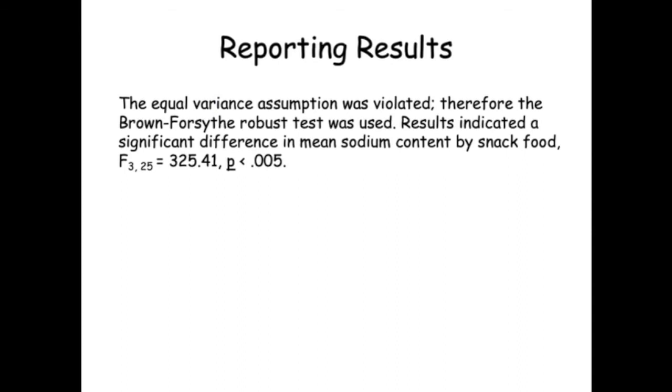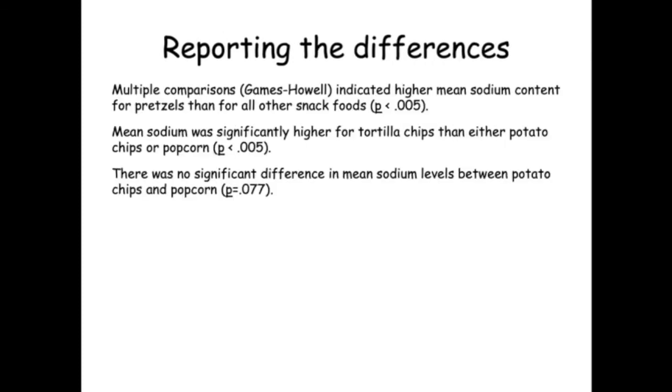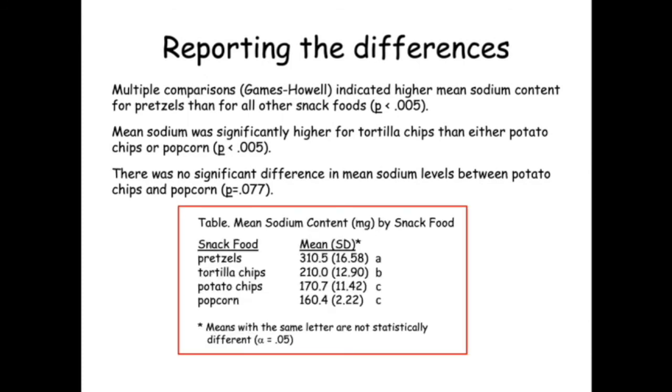The Brown Forsyth results are reported in the same way as conventional ANOVA results, with the added statement that the robust test was used and why. The summary must include all paired comparisons. A table of mean differences can be useful in visualizing these differences.